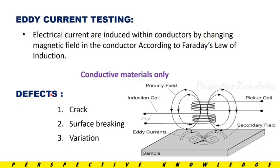Eddy Current Testing. Electrical currents are induced within conductors by changing a magnetic field in the conductor according to Faraday's law of induction. The Eddy Current testing method can only be carried out on conductive materials. The magnetic field is adjusted, and we can test the properties.